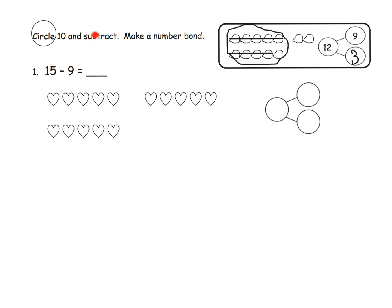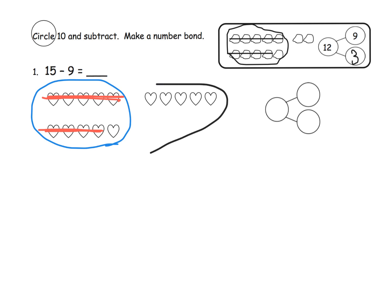It says: circle 10 and then make a number bond. The idea is we've got 15 minus 9, so here's 10 plus 5 equals 15. We've drawn our 15 hearts, circled our 10, and now we subtract 9 — crossing off these 5 and then these 4. We can clearly see our answer is these 5 plus this 1, which is 6. Our number bond has 15 as the whole, 9 as what we're subtracting, and 6 as the answer.